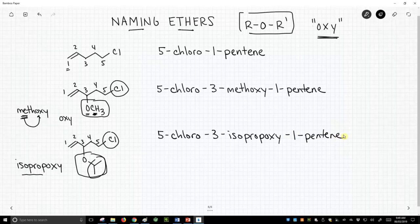So this is how we incorporate ethers into our names. The ether substituent is an oxy group, and then on the front of the oxy group, we stick the alkyl group. What is the other R group that's attached to the oxygen? And that's how we incorporate ethers.